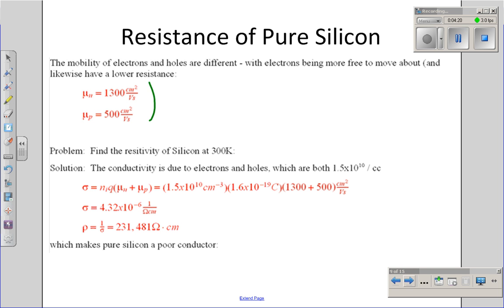To find the resistance, it's actually easier to find the inverse of the resistance, called the conductivity. Conductivity is a function of the number of charge carriers. For semiconductors, it's both electrons and holes. If, for example, I have a piece of intrinsic silicon, meaning pure silicon at room temperature, 300 degrees Kelvin,